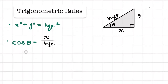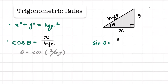So if you want to find theta, cosine of theta will be cosine inverse of x over the hypotenuse. For sine of theta — sine is opposite over hypotenuse — this will be y over hypotenuse, and if you want to find theta it will be sine inverse of y over hypotenuse. For tangent of theta, that's opposite over adjacent, which in this case will be y over x.